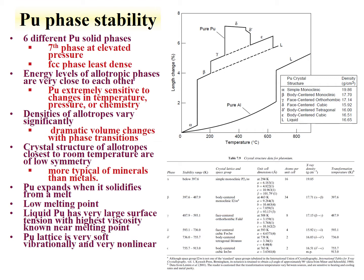Plutonium metal has some extremely interesting properties, particularly its different phases. The metal goes through six solid phases. A plot of length change versus temperature shows one, two, three, four, five, six solid phases and a liquid phase. The face-centered cubic phase is the least dense. All these energy levels are close to each other energetically, which is why they can be reached simply by heating the sample.